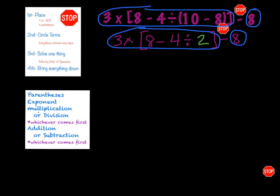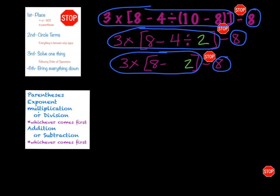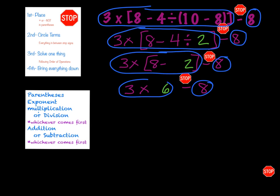As I place my stop sign and circle my terms, I'm looking again for parentheses. Inside I have division and subtraction, and division always comes before subtraction, so I would divide four divided by two to get two, and bring everything else down. I still have information inside the brackets, so I have to include that before I can bring everything else. I add my stop sign and continue circling my terms. Now I'm down to my last set of parentheses, which are the brackets. Eight minus two is six, and when I bring the rest down, I have three times six minus eight. I use my last stop sign and circle my terms. I no longer have parentheses or exponents, but I do have multiplication, so I solve three times six, which is 18. Then I can solve 18 minus eight, which is ten, and circle my answer.